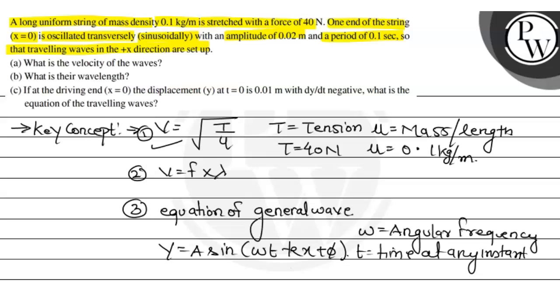If we talk about k, k is called propagation constant. And phi, which is basically phase angle. And a, kids, here is amplitude. So these are all basic things.